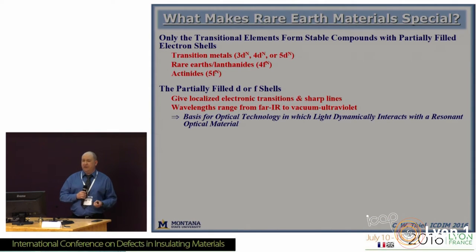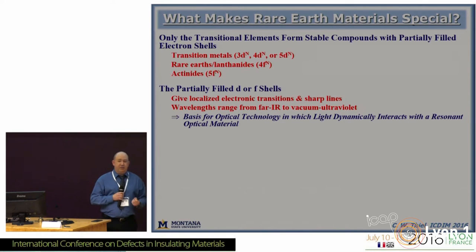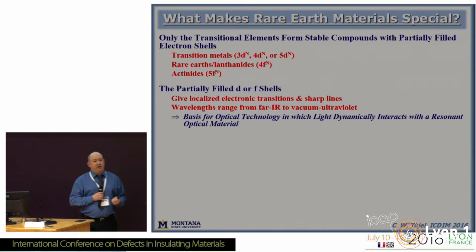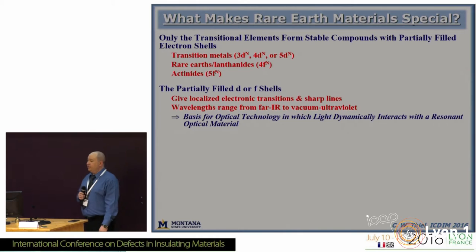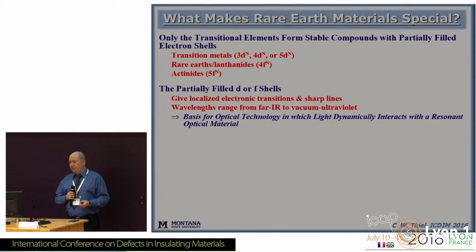What makes the rare earth ions so special? What gives them their properties? When we think about what kind of materials can interact with light to provide a dynamic capability between light and a solid state material, first we have to have an unfilled electronic shell. That can be a color center, which typically couples very strongly to the environment, or if we're thinking about ions, that's the transition elements — D electron states or F electrons — these partially filled shells that have transitions at low enough energy to provide transitions in the optical regime.